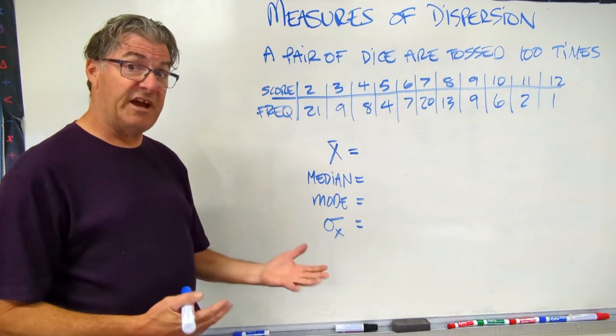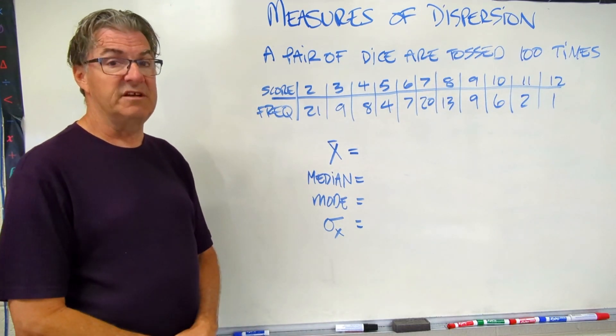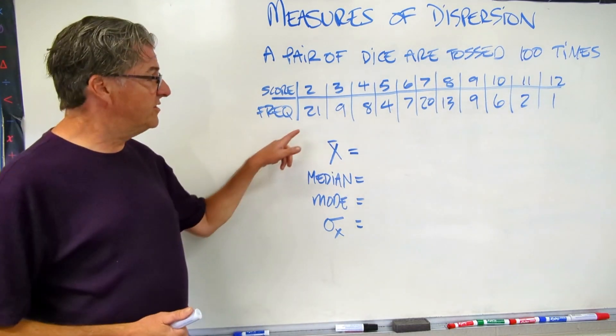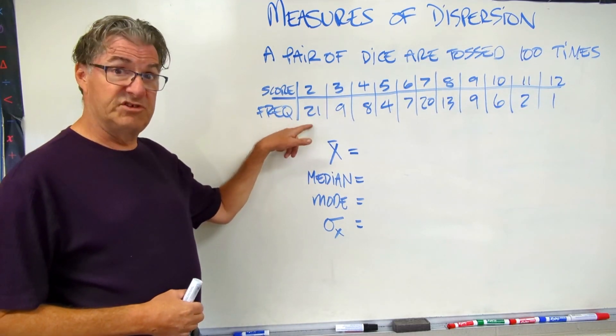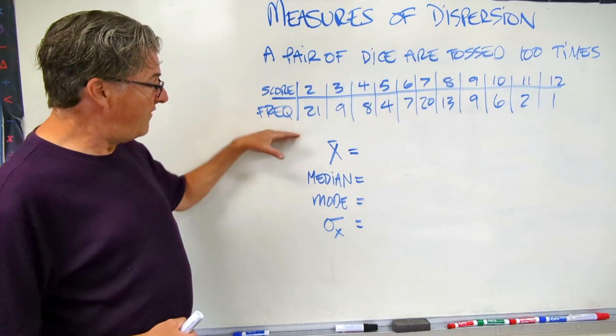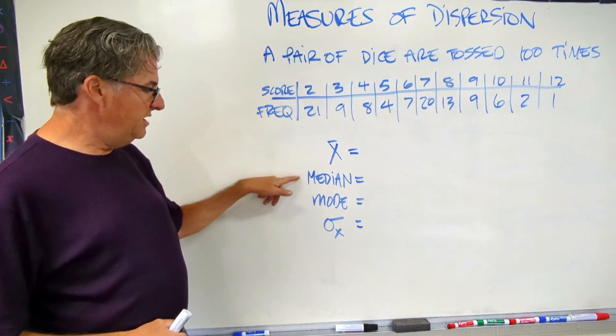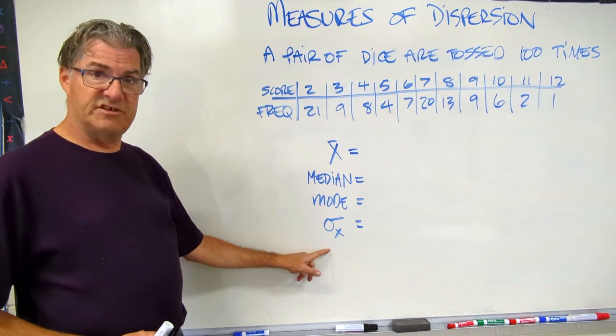Okay. Now, I'm not going to answer that question right away. Let's do the calculation first, and then we'll talk about the data set. So what I want you to do now is enter this data into your graphing display calculator and find the mean, the median, the mode, and the standard deviation.